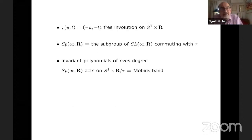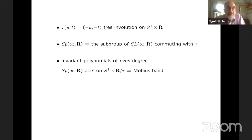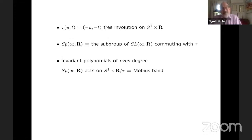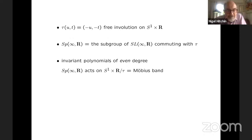So what that means is that representations which come from a metric actually lie in a subgroup of SL(∞,ℝ). So if we take this free involution on S¹ × ℝ, then I'd like to define Sp(∞,ℝ) to be the subgroup commuting with this involution. Why Sp(∞,ℝ)? One reason is that the invariant polynomials — if we have a function of compact support — the integral of F to the M vanishes in even degree. So that's the sort of thing that happens in Sp(2N,ℝ) in finite dimensions.